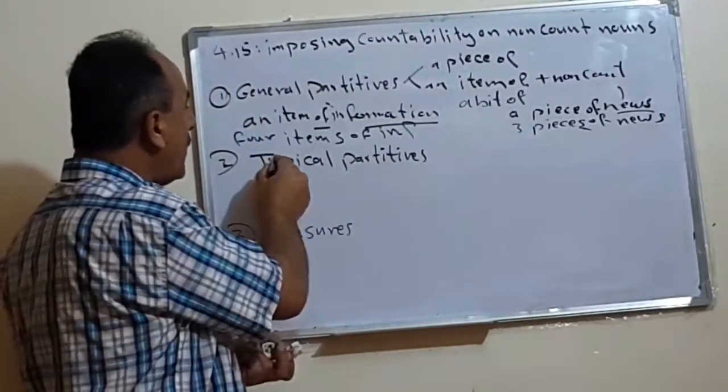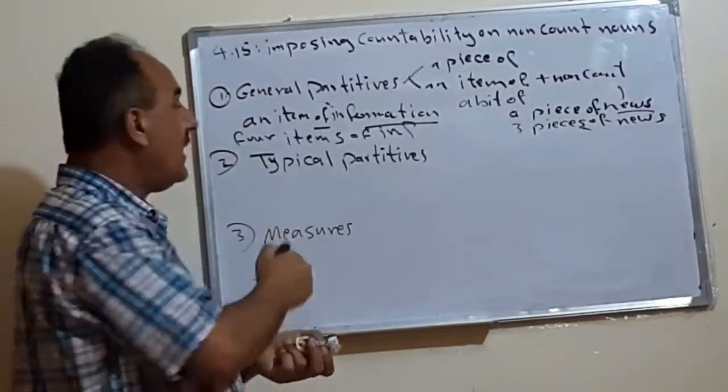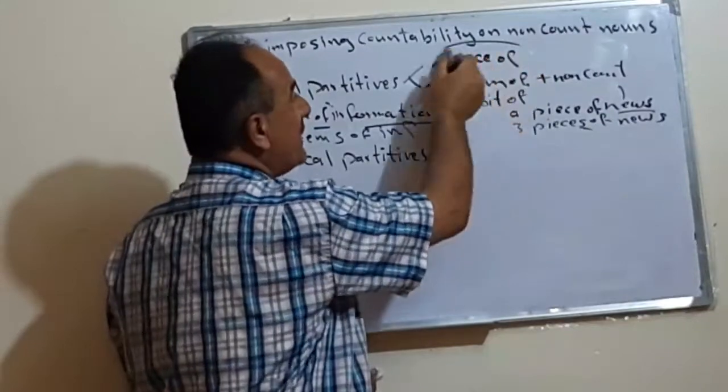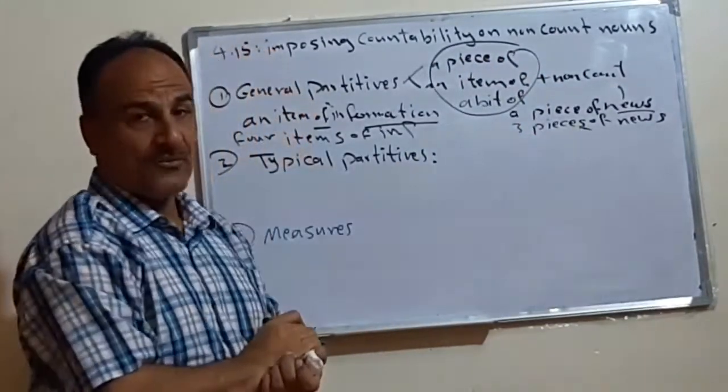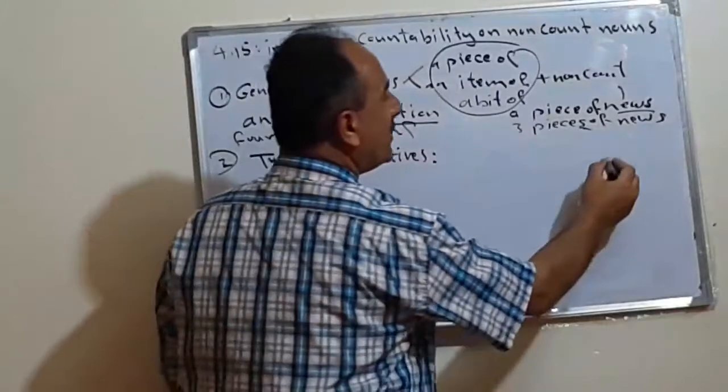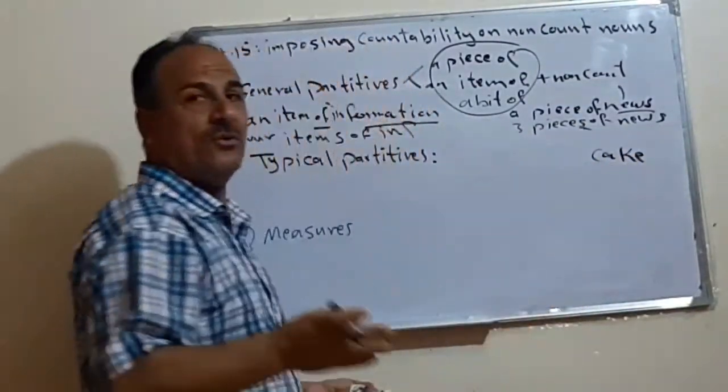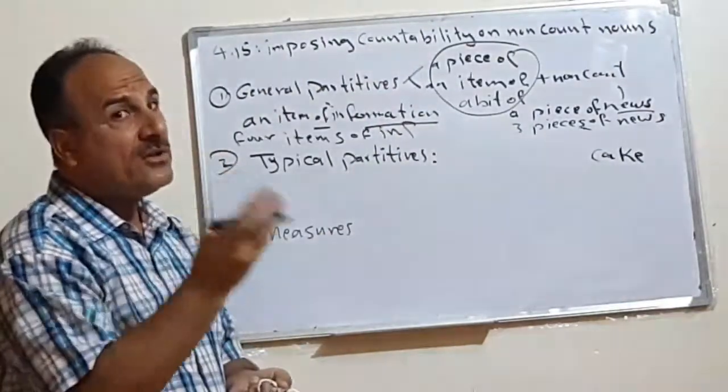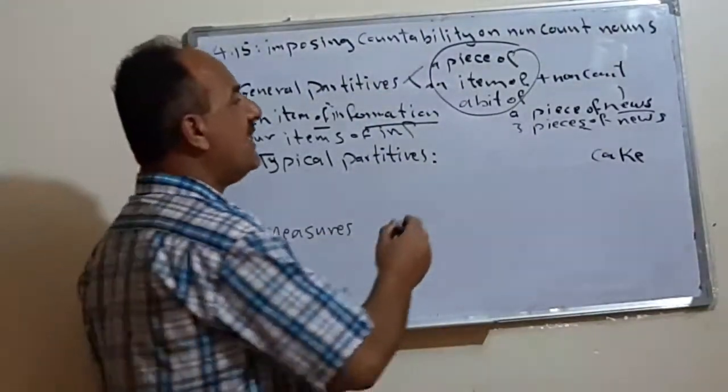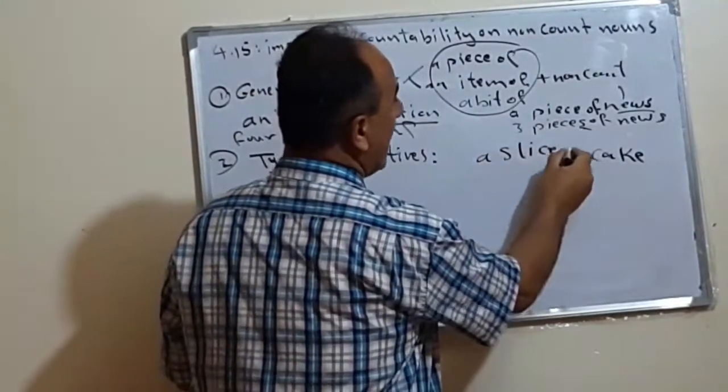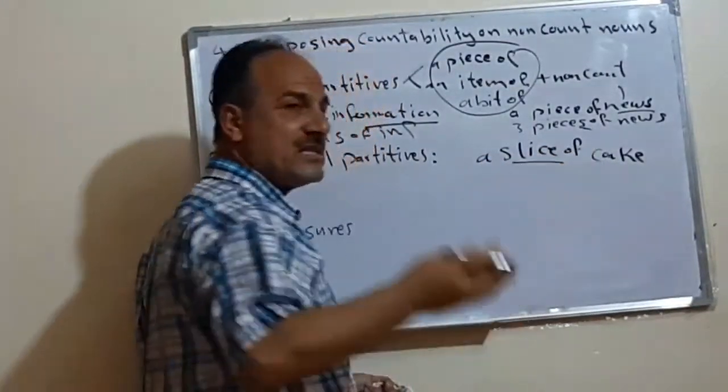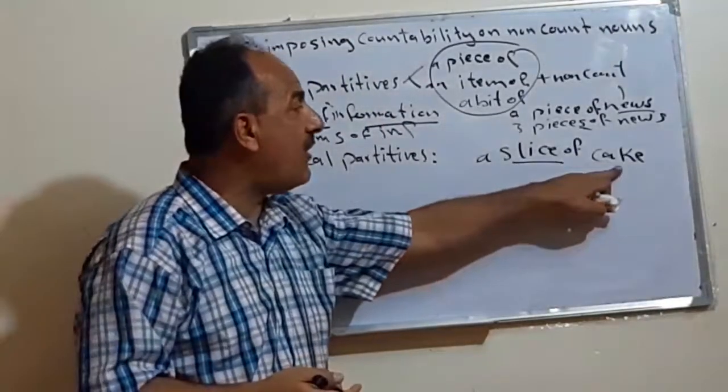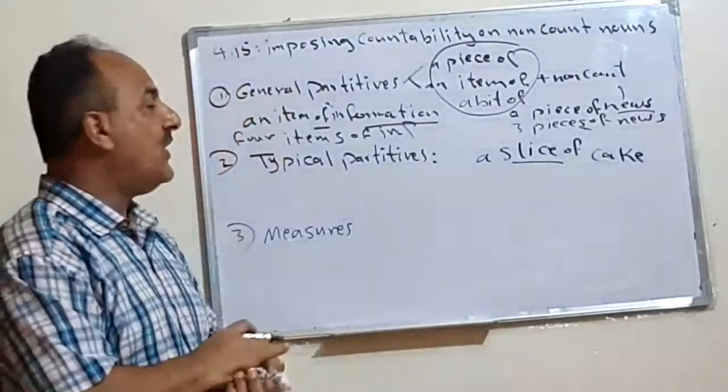The second, by using what we call typical. This is not typical. Typical partitives. What does it mean? Means we use such expressions according to the type of the noun. For example, if we have the word cake, we know how to divide the cake. We divide the cake into what? Into pieces. What do we call each piece? We call it a slice.